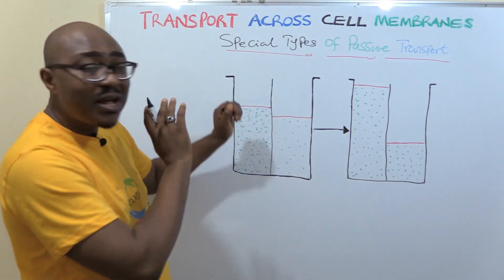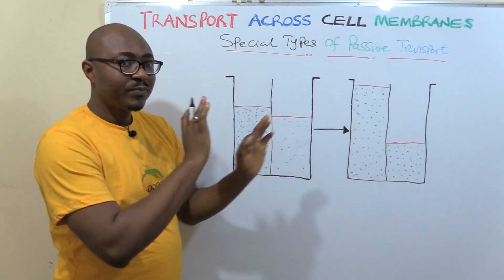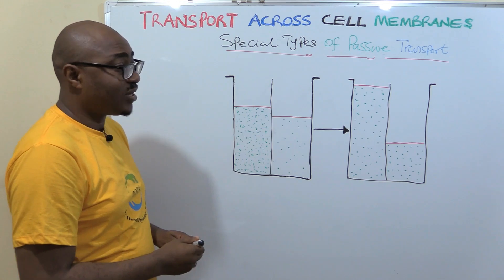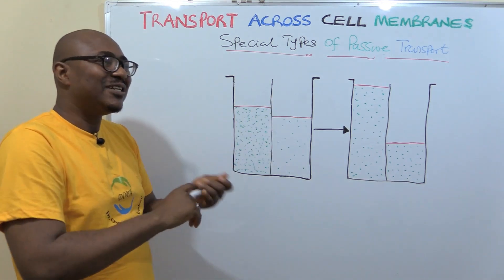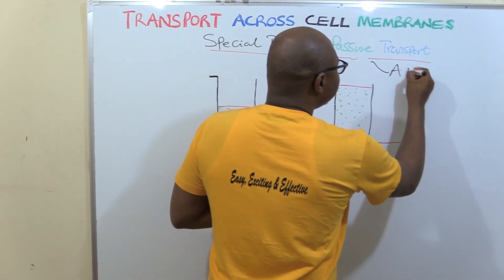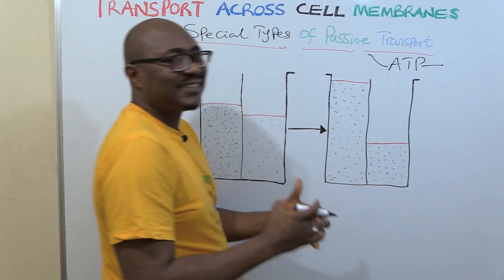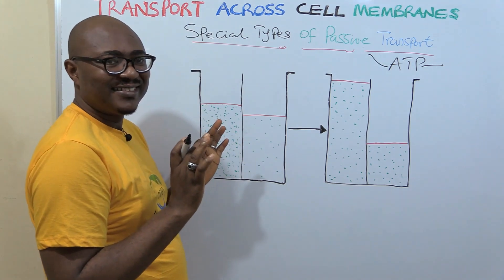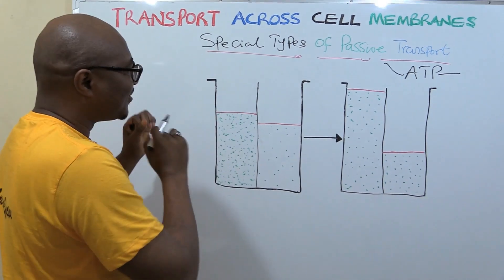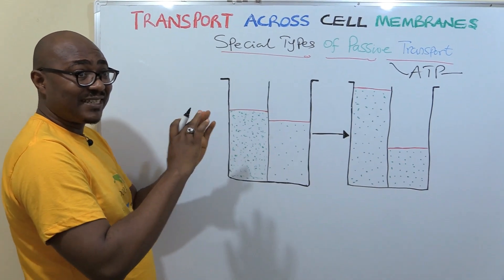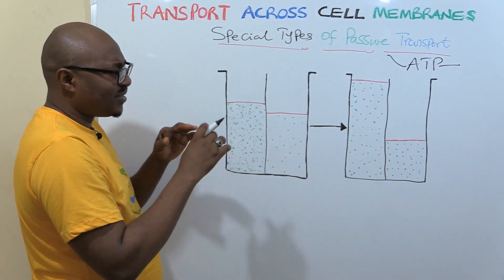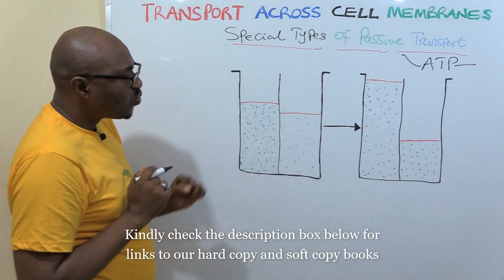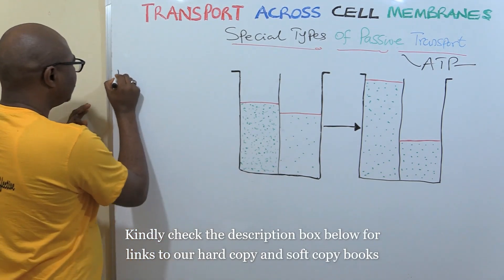Now let's get started. Today, we're going to be dealing with special types of passive transport. Meaning that they don't use ATP. Whenever you hear passive transport means that they don't use adenosine triphosphate as their energy source for movement. Doesn't mean that they don't use energy. Every movement needs energy. We've talked about that in part one, the previous lecture.